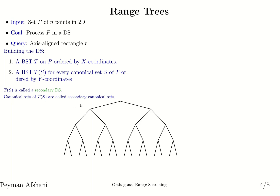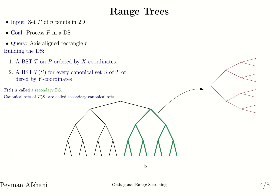Let's look at a picture. This is a balanced binary search tree stored on the x coordinates — all the points in the right subtree have higher x coordinates than all the points in the left subtree, and this property holds recursively. To build the secondary data structure, we take one canonical set — let's say this node — and all the points stored in the subtree of this node. We then store these points in a second binary search tree, but this time the ordering is given by the y coordinates. So the points stored in this red subtree are the same set of points as in the green subtree; the only difference is that the green points are ordered by x coordinates whereas the red subtree is ordered by y coordinates. This is a relatively simple data structure to build.